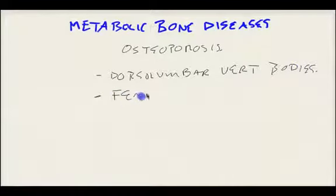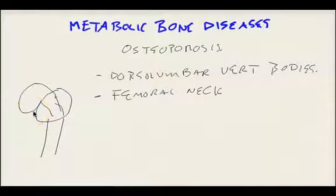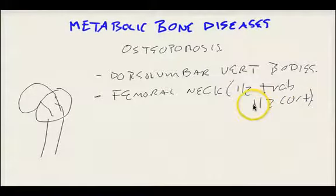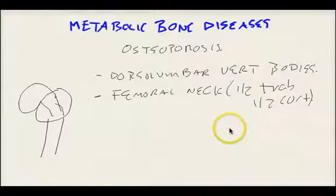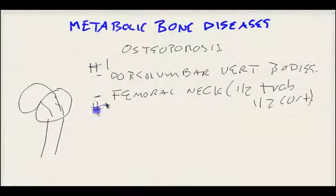If we look at the femoral neck, we know that we have the head and then we have the neck. That femoral neck is half trabecular bone, half cortical. Because of the significant amount of trabecular bone in the neck of the femur, this is going to be a very high-risk area for fractures. The number one area fractured in people with osteoporosis is the dorsal lumbar vertebral bodies, and the femoral neck is number two.